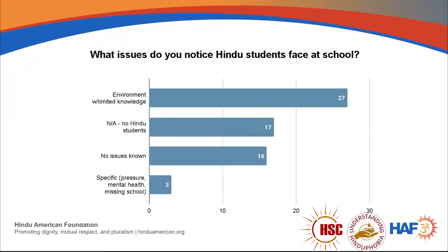Another survey question asked teachers what issues they noticed Hindu students face at school. Twenty-seven of the 63 teachers said Hindu students are in an environment with limited knowledge about Hinduism — comments indicating that limited knowledge from other students, the district, and potentially other teachers led to misinformation, misrepresentation, and specific incidents where Hindu students felt alone or challenged. Seventeen of these teachers said they had no Hindu students at all — ranging from none in their classroom, to none in their school, to never having had a Hindu student.